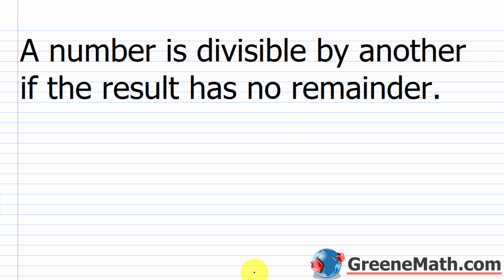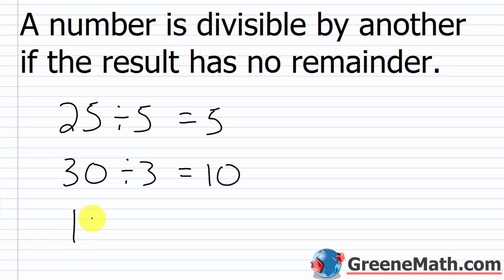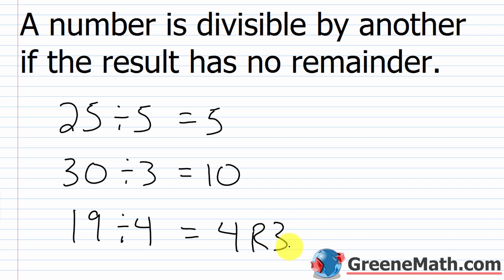So what does it mean when we say a number is divisible by another? A number is divisible by another if the result has no remainder. For example, 25 is divisible by 5 because 25 divided by 5 is 5 with no remainder. 30 is divisible by 3 because 30 divided by 3 is 10 with no remainder.